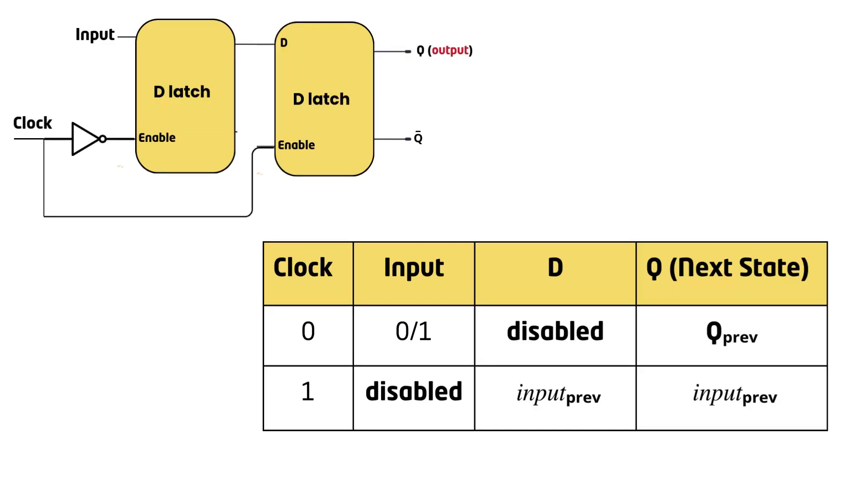In other words, a D flip-flop copies D to Q on the rising edge of the clock and remembers its state at all other times. This prevents glitches and ensures synchronous operation, making the D flip-flop a stable memory element.